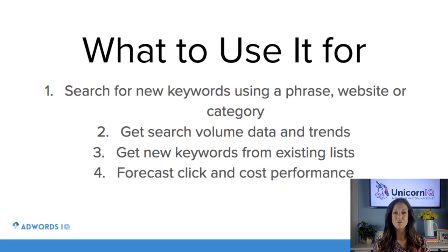Another thing we can use it for is getting new keywords from existing lists. If we already have a list that we're using — maybe it's in your account or maybe you're using it for SEO or something like that — you can copy and paste the keyword list into Google Keyword Planner and it'll help you find some new keywords related to what you're already targeting.